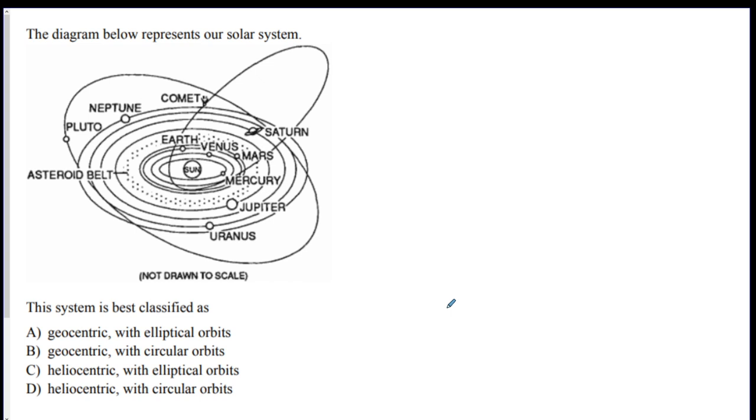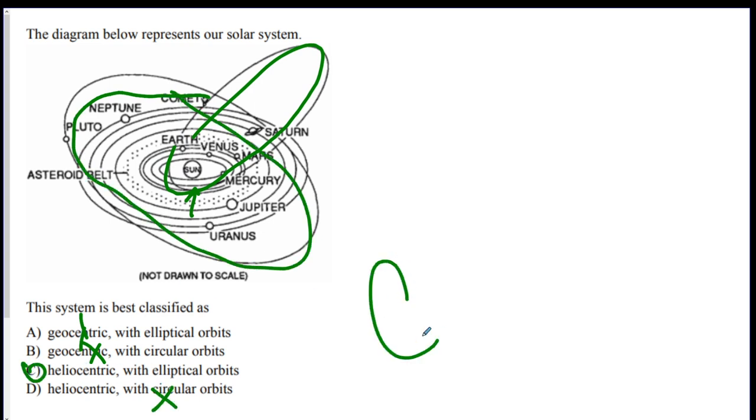Number two, this system is best classified as what? Is it geocentric or heliocentric? First off, well, the sun's in the middle. So that means it's not geocentric. So this is gone, and this is gone. Now, are these orbits perfect circles, or no? So let's see. Look at this one. This is super-duper oval. Super-duper oval. These are not perfect circles, so we can get rid of D. So C is your best answer for this.